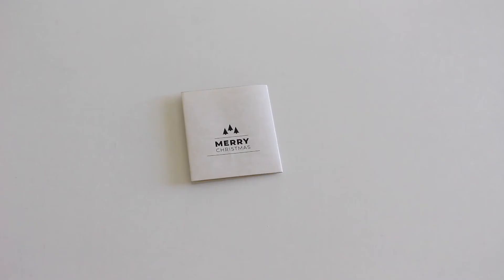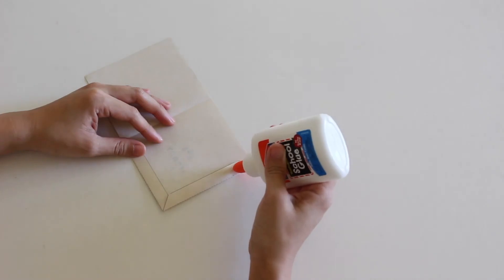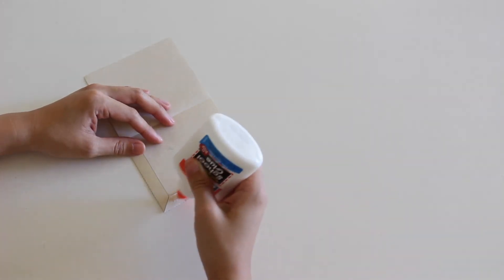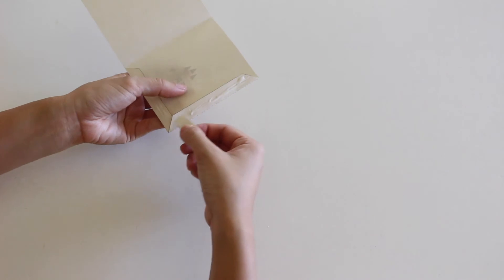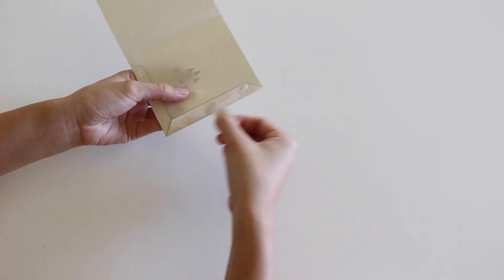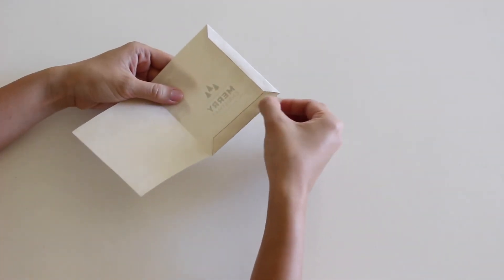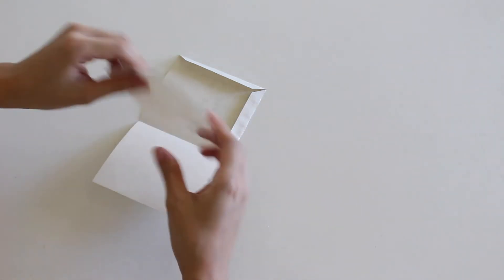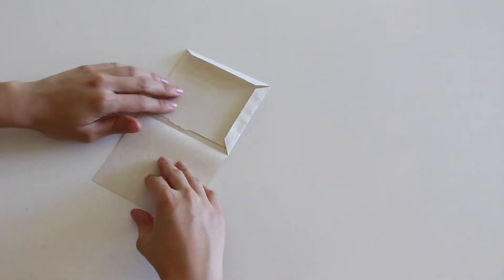Flatten it and glue down the tabs to make a pouch. I added a scrap piece of paper inside so that the glue wouldn't stick to both sides.